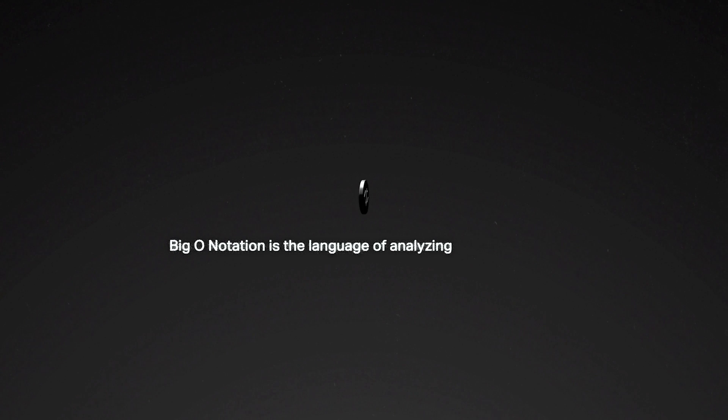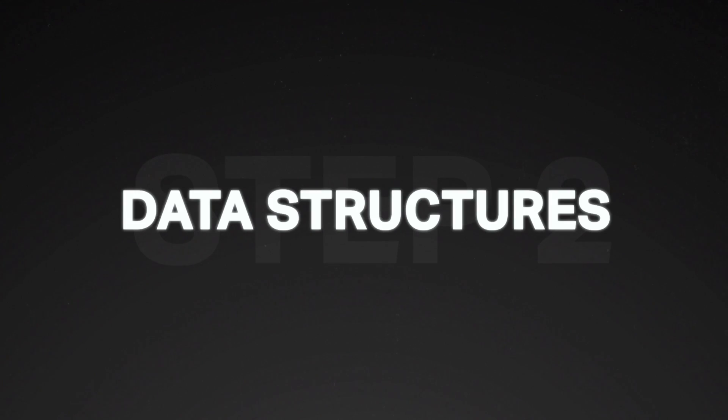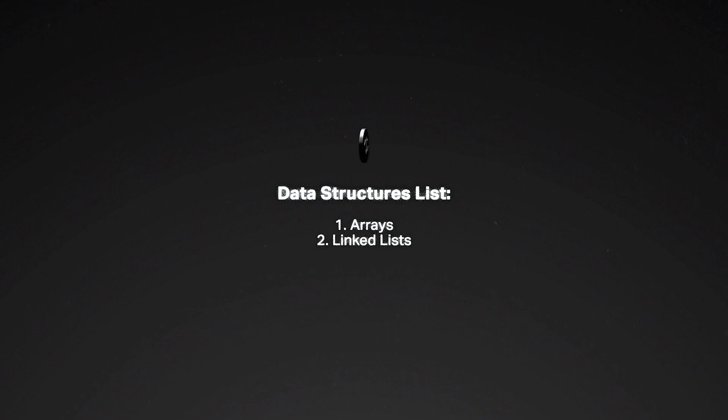First, before you do anything, you want to learn big O notation. Big O notation is the language of analyzing algorithms and data structures. If you're wondering how to answer the question of when is an algorithm fast or slow, big O notation gives you a framework for talking about these things. It also allows us to talk about when an algorithm or data structure takes a lot or little space in memory. This is massively important because in every interview and every coding problem, you will have to give the big O of any given algorithm. So it's super important that you first understand how big O notation works really, really well. When it comes to data structures, the topics that should cover about 95% of what you need are: arrays, linked lists, queues and stacks, trees, graphs, and hash maps.